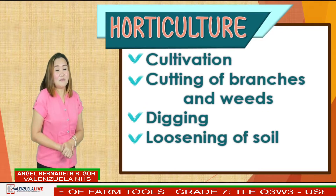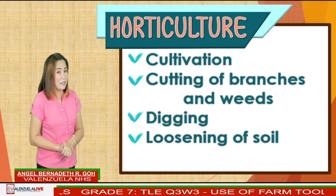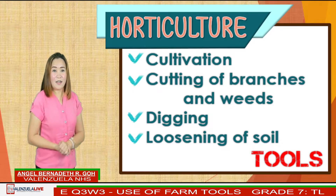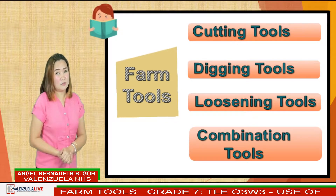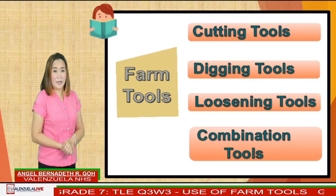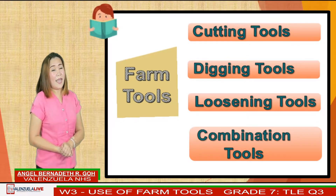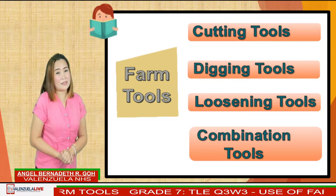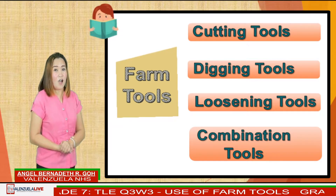Horticulture requires different activities like cultivation, cutting of branches and weeds, digging, and loosening of soil, and a lot more. So we need tools. Farm tools are categorized according to their uses. We have cutting tools, digging tools, loosening tools, and combination tools. Cutting tools are used for cutting branches and weeds. Digging tools are used in the excavating process. Loosening tools are used to decompress the top layers of the soil. Combination tools are tools that can perform more than one function.